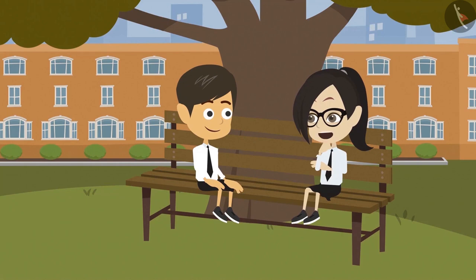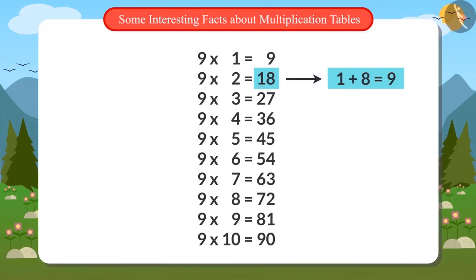Really? I don't believe it. I will do it myself. Third number in the table of 9 is 27. If we add the digits 2 and 7 of it, we get the answer 9. Fourth number is 36. And adding both 3 and 6, we will also get the answer 9.